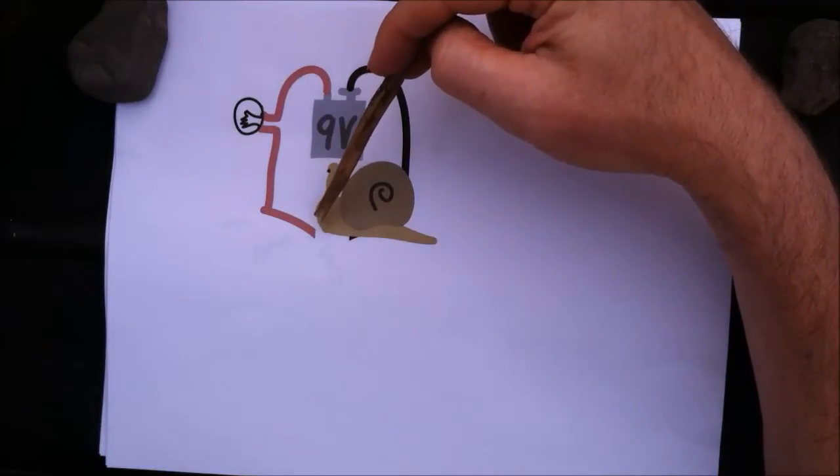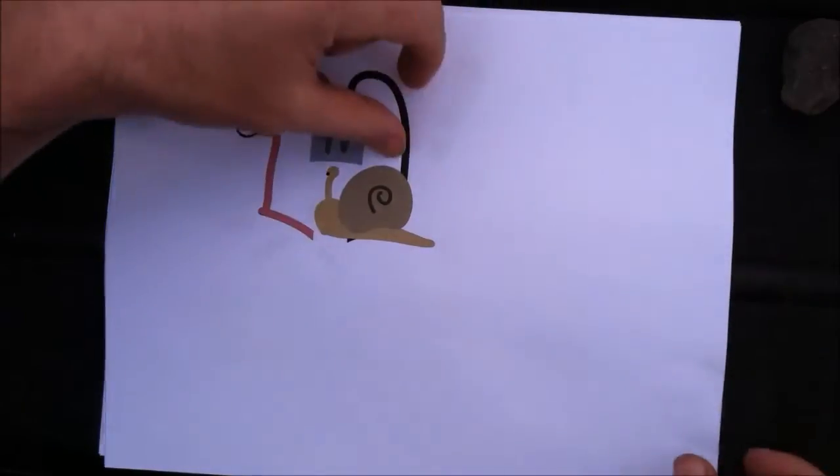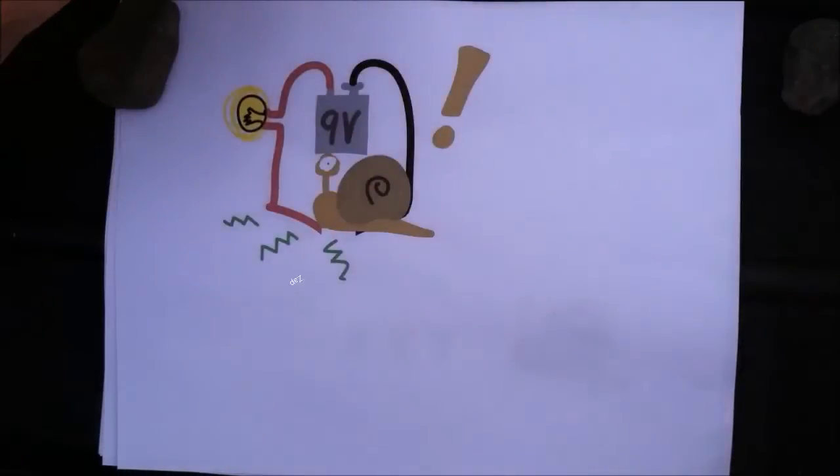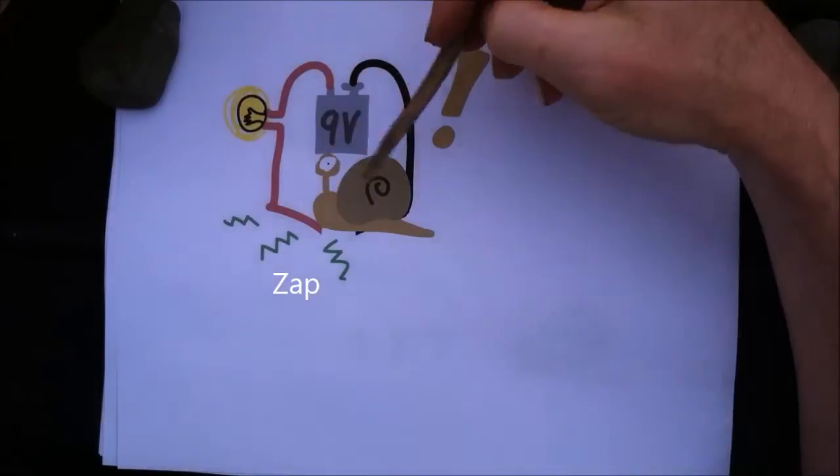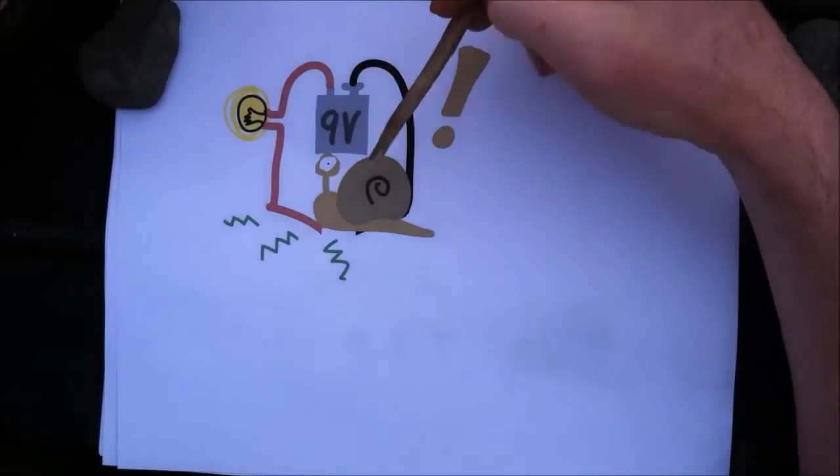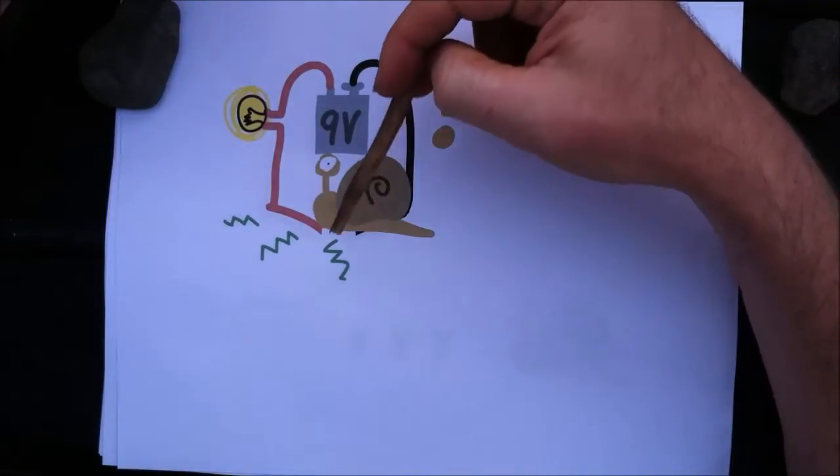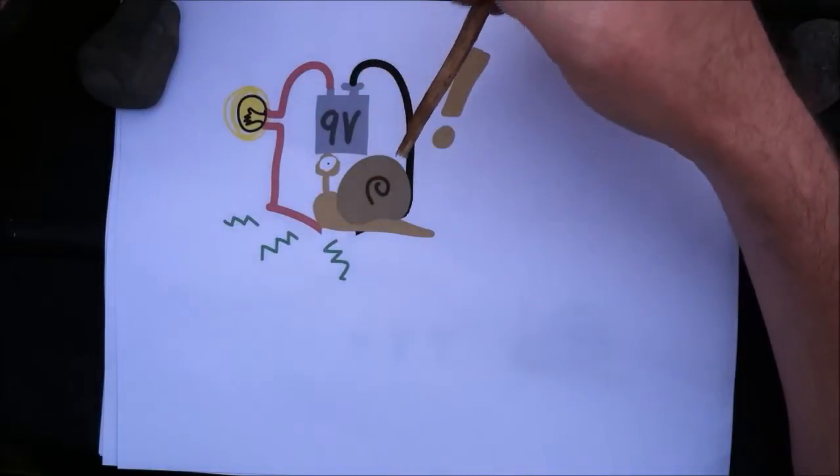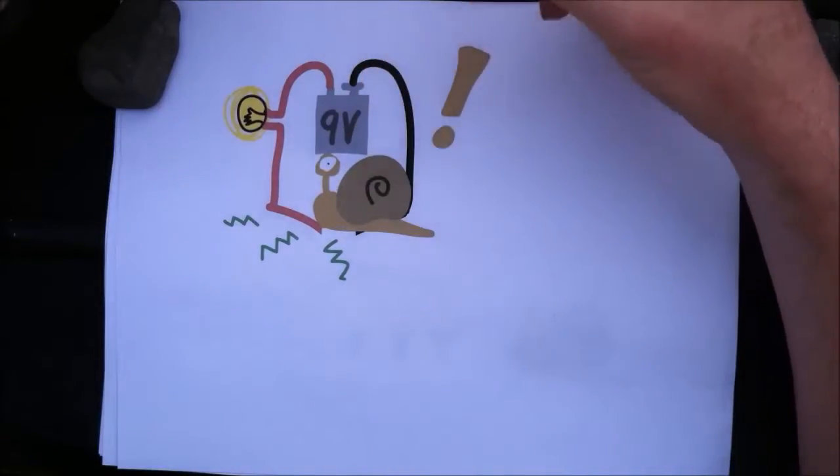So it can be really close and nothing will happen. And the only time the charge is going to be coming through this conductor, in this case a snail, is when it touches both of these bare wires at the same time. And you can see now the snail gets the picture.